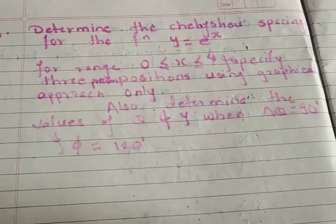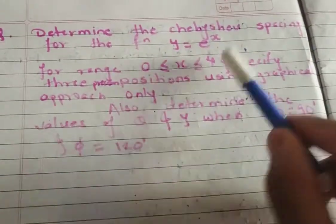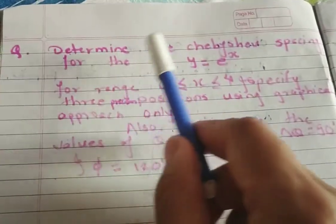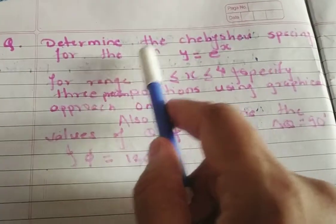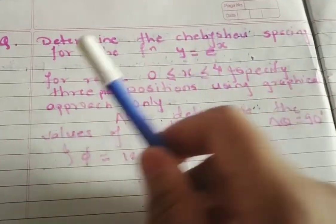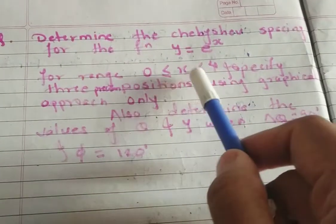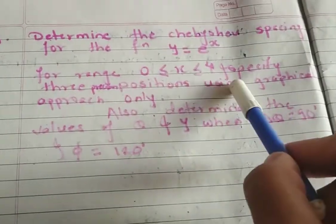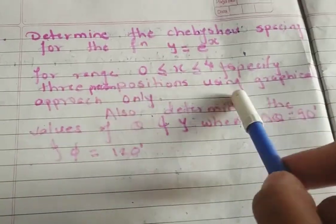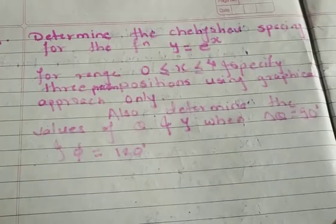Hello everyone, today we are going to discuss a numerical problem based on Chebyshev spacing. The problem is to determine the Chebyshev spacing for the function y = e^x for the range 0 ≤ x ≤ 4, and specify the three precision positions using graphical approach only.